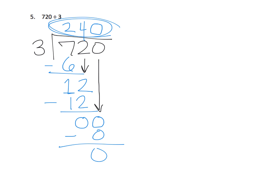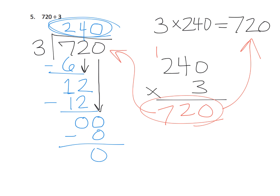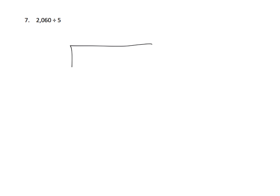We check by doing 240 times 3. We have no remainder, so we don't worry about that. Three times zero is zero; three times four tens is twelve tens, so that's two carry the one; three times two hundred is six hundreds plus one more is seven hundreds — we get 720, exactly what we were aiming for. That tells us our answer of 240 is correct.